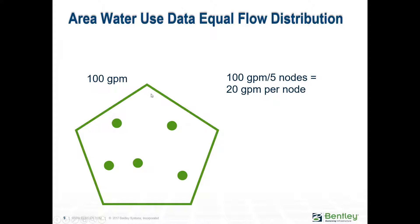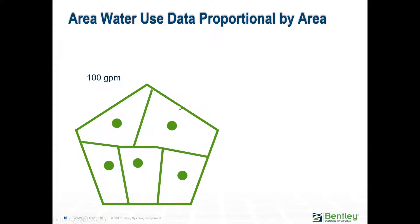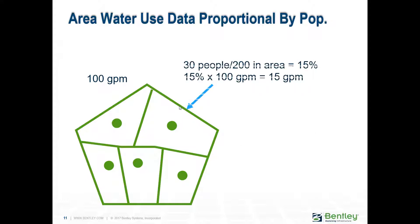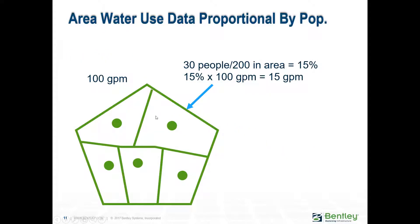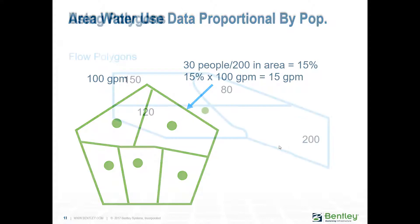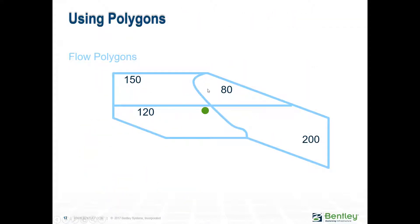If you have a polygon where all users consumed, say, 100 gallons per minute, how do you divide that between your manholes? You can distribute it proportionally by area, proportionally by population if you know how many people are in each polygon, or simply divide it equally — for example, giving each of five nodes 20 gallons per minute. You can also have different flow polygons.